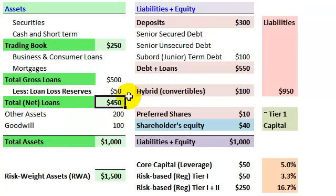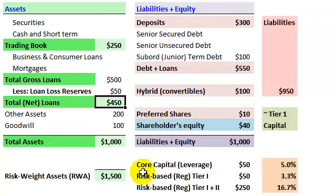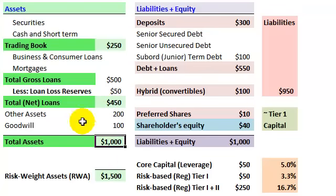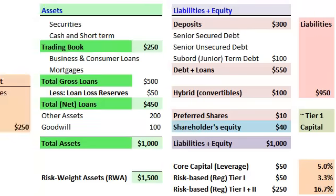The expected losses are covered by the loan loss reserves, but not the unexpected losses. Unexpected losses are covered by the capital buffer, including the regulatory capital requirements under Basel II. Just to finish up the asset side: $450 in net loans plus some other assets including Goodwill gives us $1,000 in total assets in my stylized example.